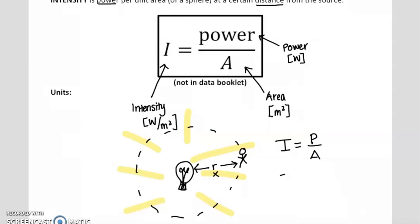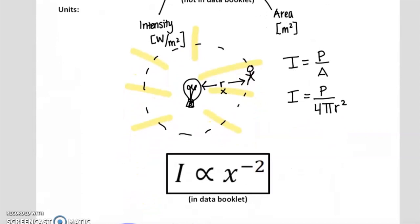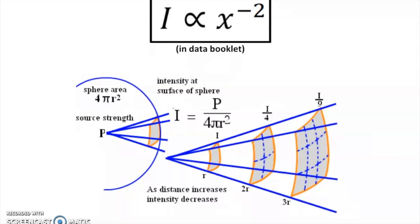So we could take this equation — I is P over A — and do a substitution for A, the area of a sphere, which is 4πr². Again, that r is the distance between the source and the observer. And that brings us to the first equation listed in your data booklet: I is proportional to x to the negative 2. The intensity is proportional to the inverse square of distance.